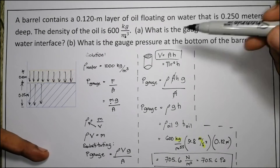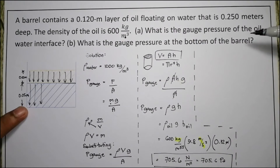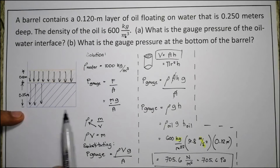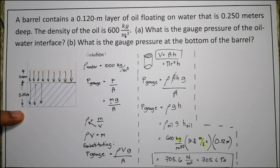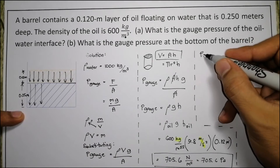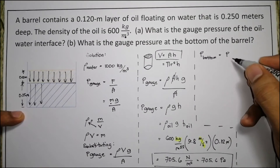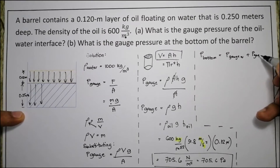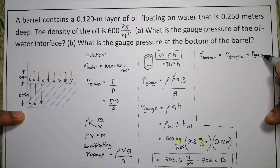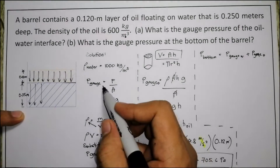For letter B, the gauge pressure at the bottom of the barrel — looking at the drawing, at the bottom there are two forces acting: the force from the oil and the force from the water. So the gauge pressure at the bottom equals the gauge pressure of water plus the gauge pressure of oil. We already solved the gauge pressure of oil as 705.6 pascals.